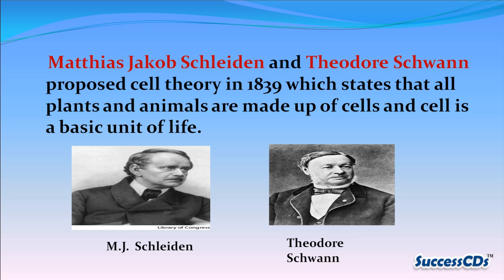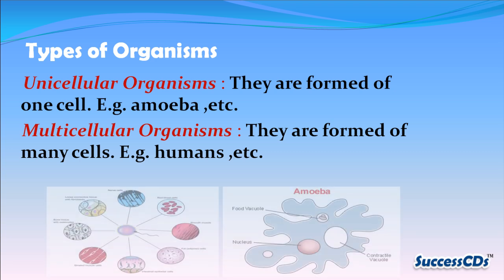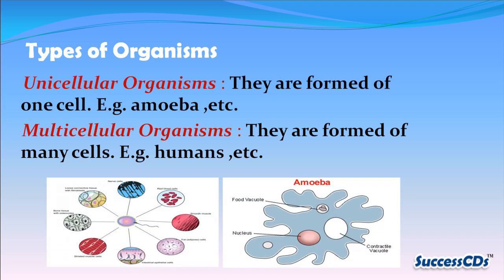Matthias Jakob Schleiden and Theodor Schwann proposed cell theory in 1839, which states that all plants and animals are made up of cells, and the cell is the basic unit of life. Unicellular organisms are formed of one cell — examples include amoeba and paramecium.